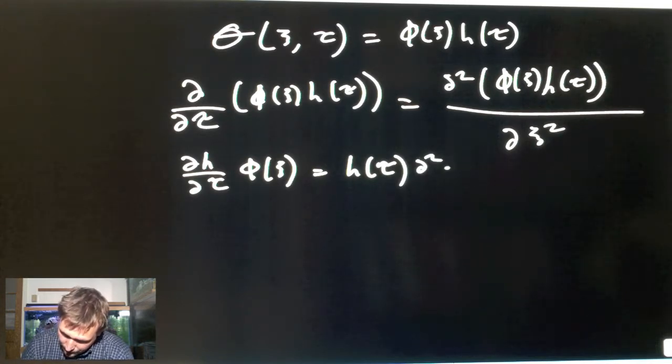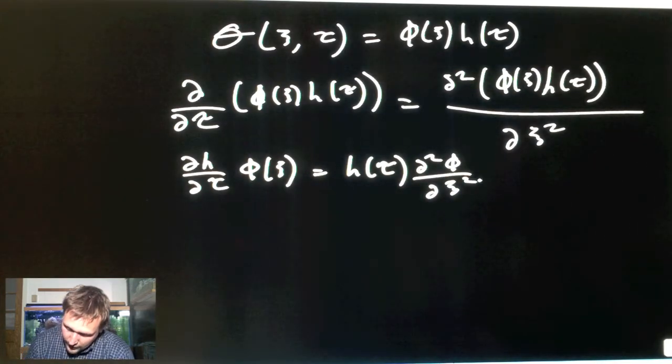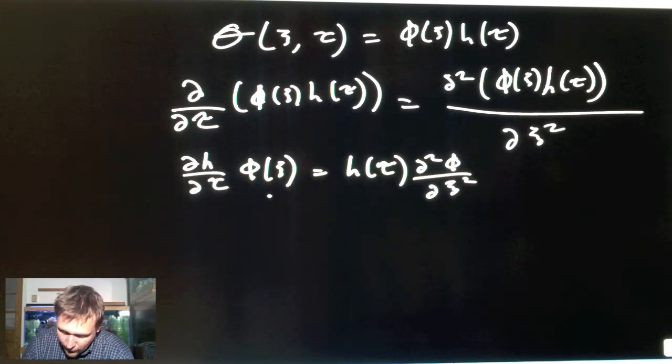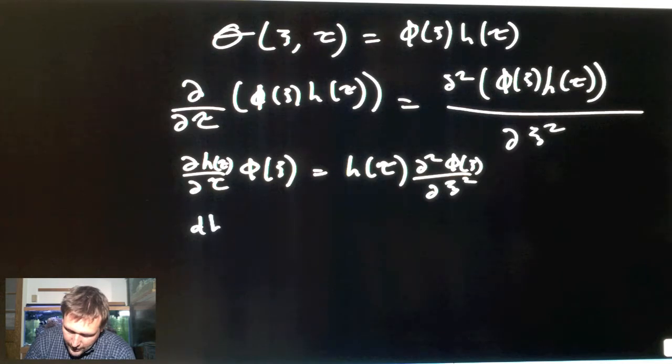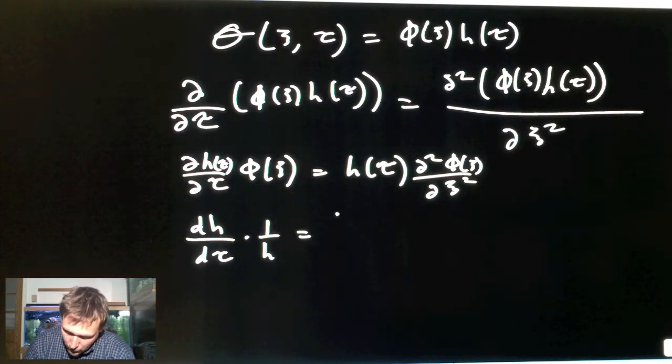We have the derivative of H with respect to τ and we can rearrange this. φ and H are now dependent upon only one variable each, and so these are no longer partial derivatives, they're actual total derivatives. So now we can rewrite this equation as dH/dτ times 1/H equals 1/φ d²φ/dψ².